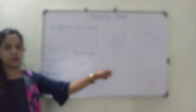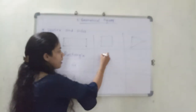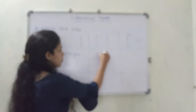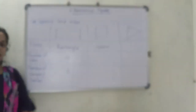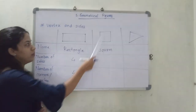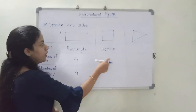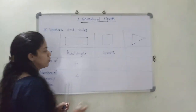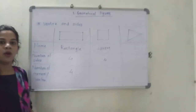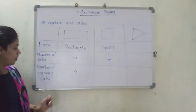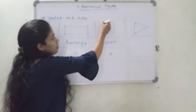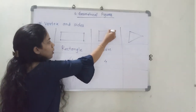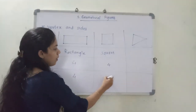Now we will see this picture. Can you tell me which geometrical figure this is? Yes, it is called a square. Can you tell me how many sides are present? We will count 1, 2, 3, 4 - so there are 4 sides. Can you tell me how many corners, how many vertices are here? 1, 2, 3 and 4.